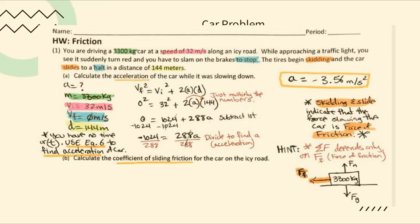Substituting values: 0² = 32² + 2 × a × 144. Write the zero squared — don't drop it. Zero squared is still zero. So: 0 = 1024 + 288a. The 288 comes from multiplying 2 × 144. We can multiply those two constants together since all three terms are being multiplied.